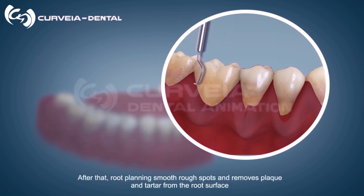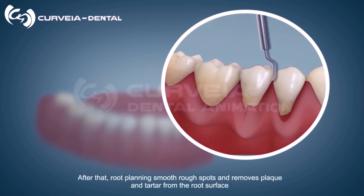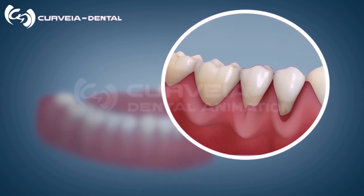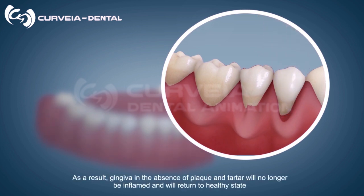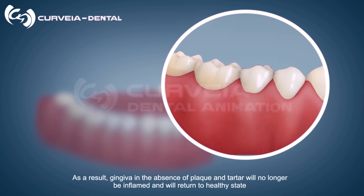After that, root planing smooths rough spots and removes plaque and tartar from the root surface. As a result, the gingiva, in the absence of plaque and tartar, will no longer be inflamed and will return to a healthy state.